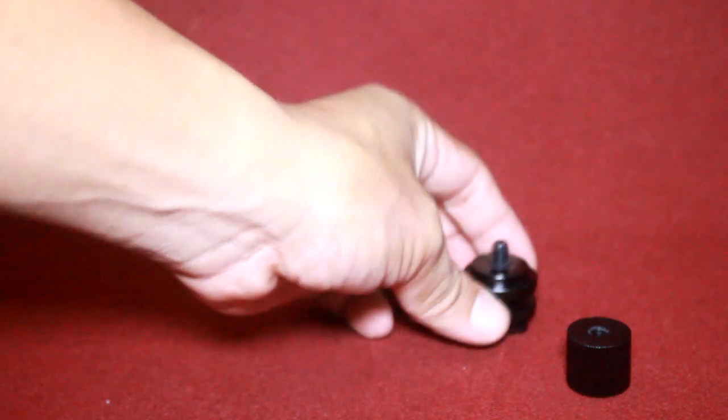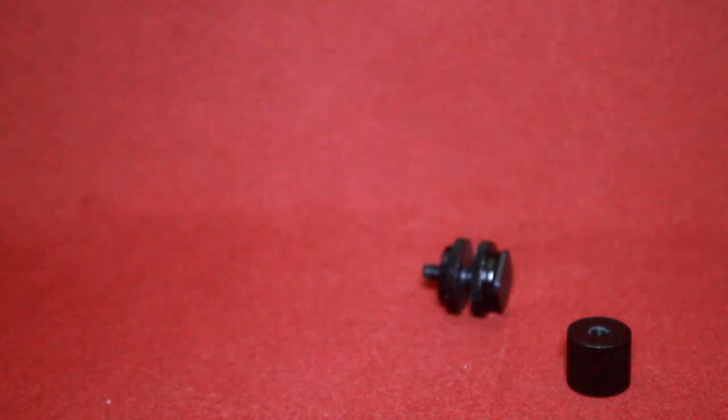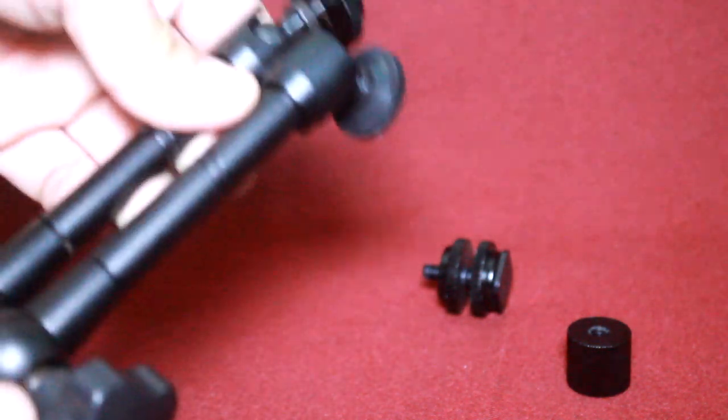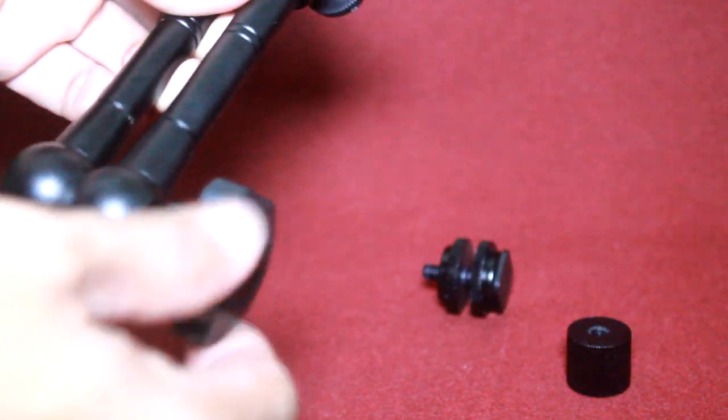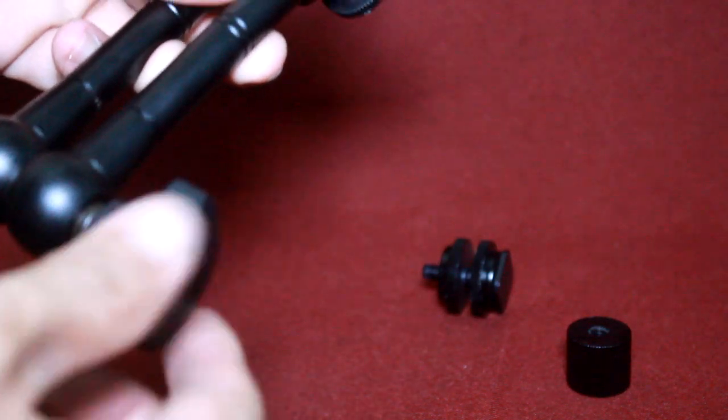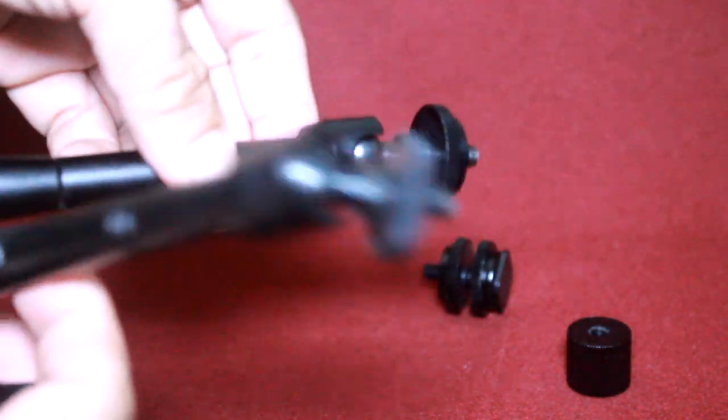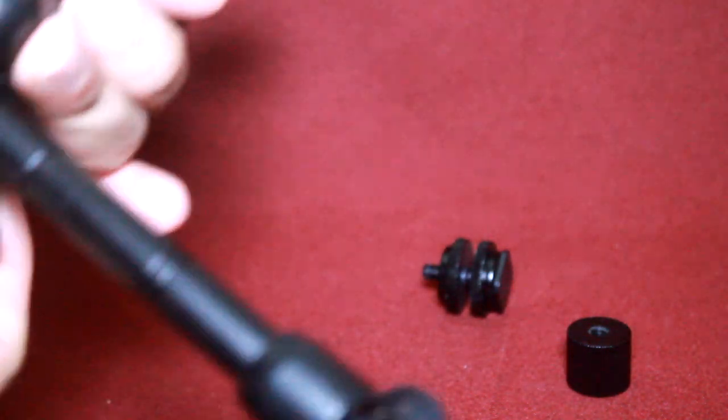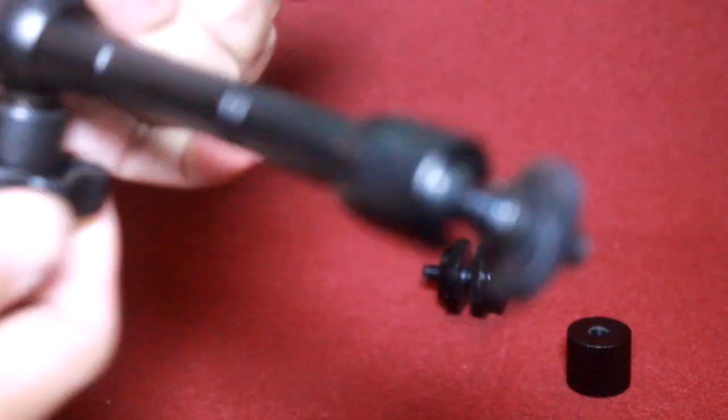This is part number two. There's a knob to loosen and tighten the arm. Look, you can set it to different angles.